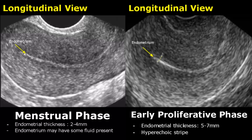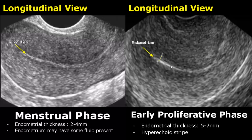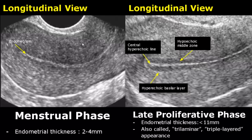The first phase is the menstrual phase in which the endometrial thickness is between 2 to 4 mm and there may be some amount of fluid present, which is normal. In the early proliferative phase, the endometrial thickness is between 5 to 7 mm — the endometrium just appears as a hyperechoic stripe. The menstrual phase image is used just for comparison.